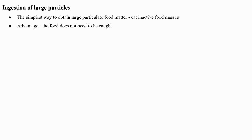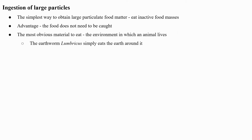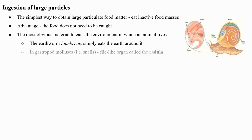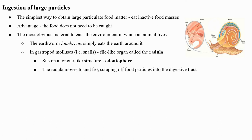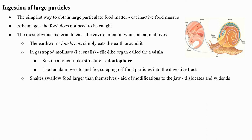Ingestion of large particles: the simplest way to obtain large particulate food matter is to eat inactive food masses. The earthworm Lumbricus simply eats the earth around it. In gastropod molluscs (snails), there is a file-like organ called the radula which sits on a tongue-like structure called the odontophore. The radula moves to and fro, scraping off food particles which are delivered to the beginning of the digestive tract.